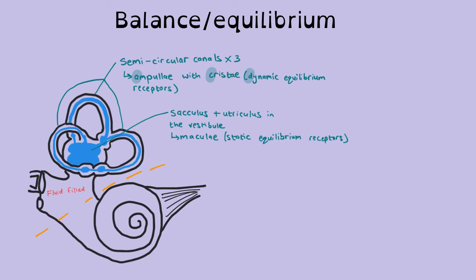So you have cristi for your dynamic equilibrium and maculae for your static equilibrium. So again, I know it's maybe a stretch, but I remember that M and S are closer together in the alphabet, along with the sacculus, utriculus, and vestibule. Those are all at the end of the alphabet.